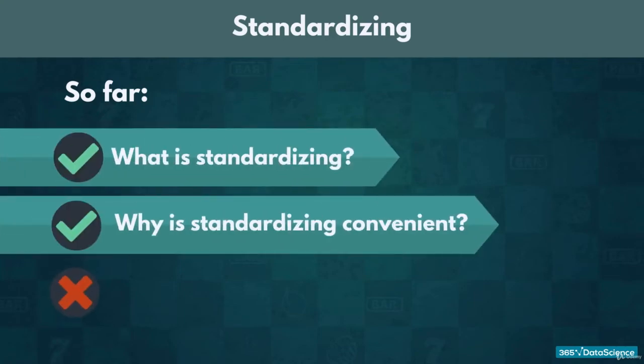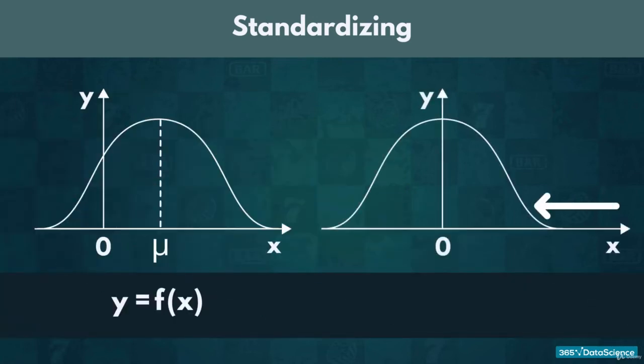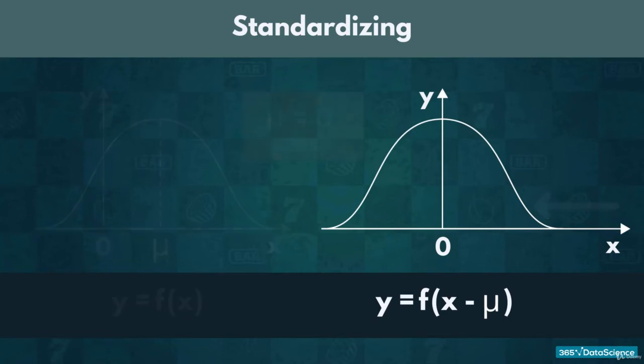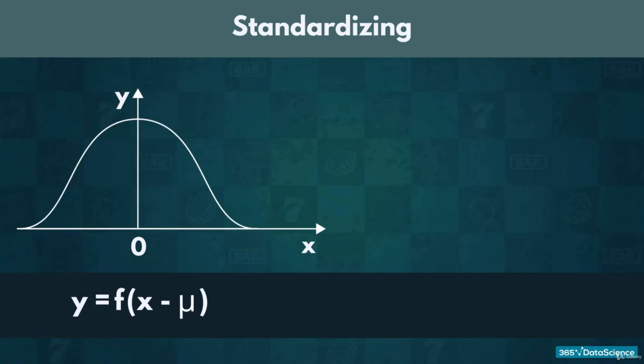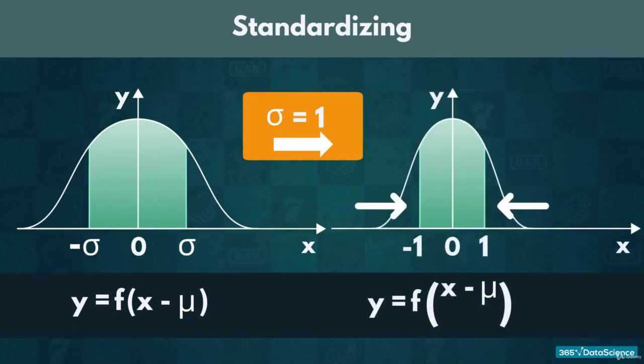What we haven't talked about is how to do it. First, we wish to move the graph either to the left or to the right until its mean equals 0. The way we would do that is by subtracting the mean, mu, from every element. After this, to make the standardization complete, we need to make sure the standard deviation is 1. To do so, we would have to divide every element of the newly obtained distribution by the value of the standard deviation, sigma.